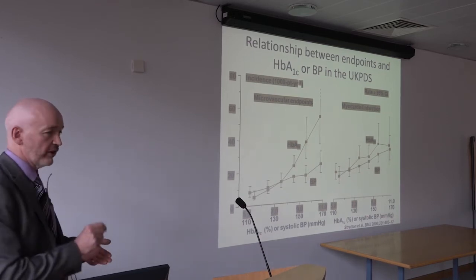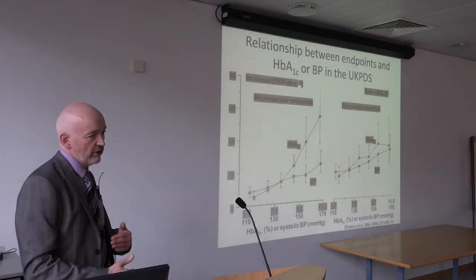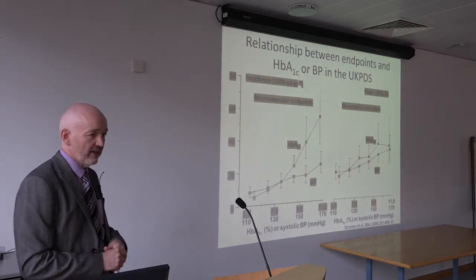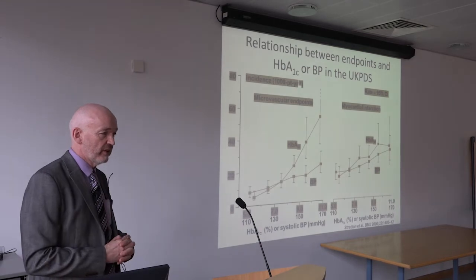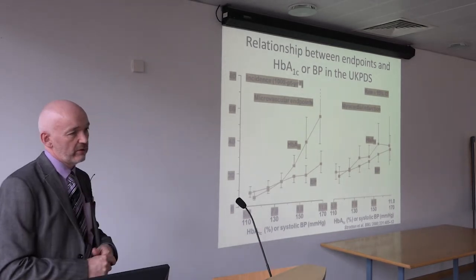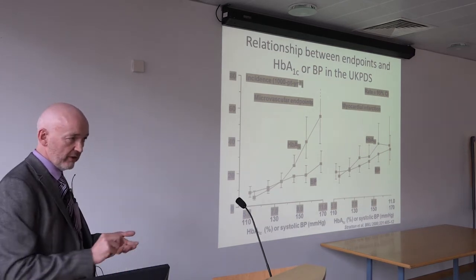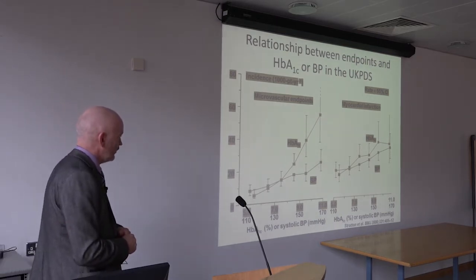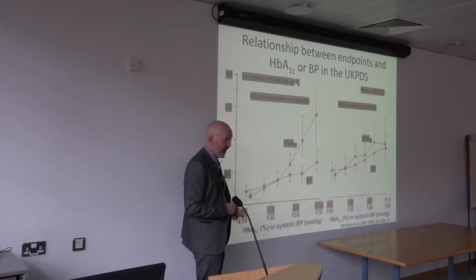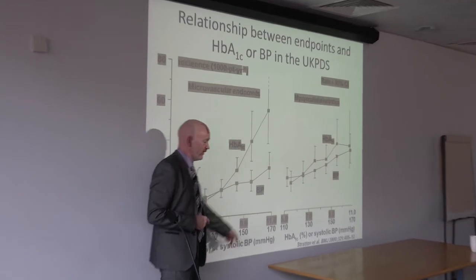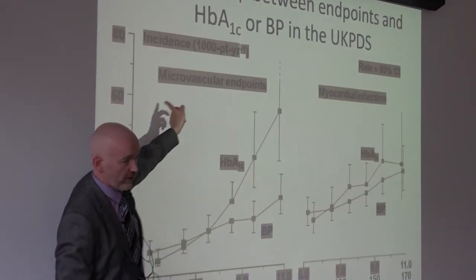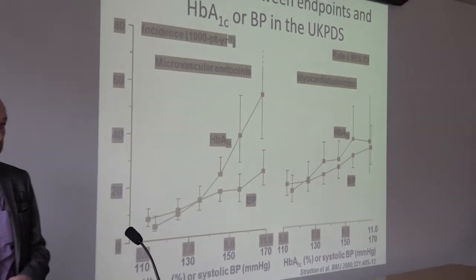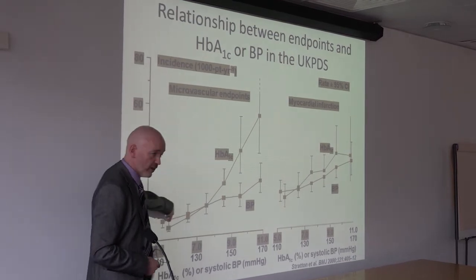In addition to finger-stick tests that measure blood sugar at a single instant, we have the HbA1c test, which tells us what the blood sugar has been on average over the preceding three months. When patients come to see us, that's the first thing we look at. A study in type 2 diabetes showed that as HbA1c increases, the likelihood of complications increases, which is why we like to see it down around 7, where the risk of developing complications is low.